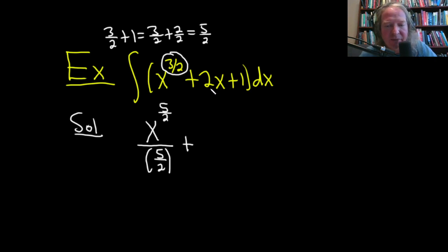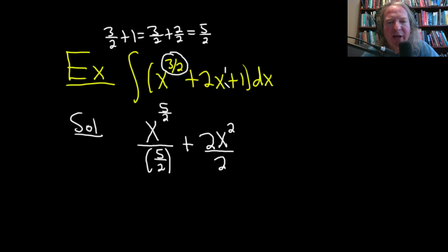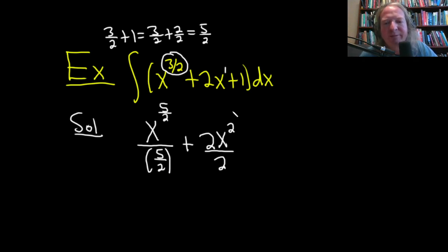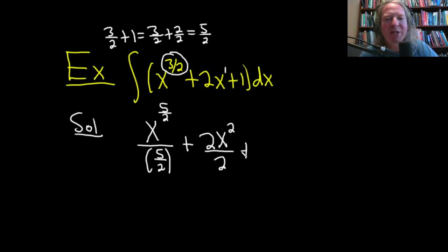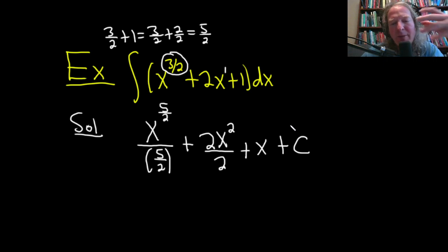Same thing for the next term: we have 2x, and when you have a number in front of x it just hangs out. The exponent on x is 1, so 1 plus 1 is 2, and we divide by 2 — the power rule: add 1 and divide. For the constant term, whenever you have a number by itself just tack on x, so 1 becomes x.